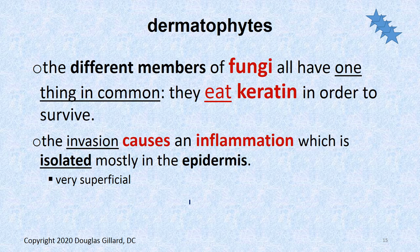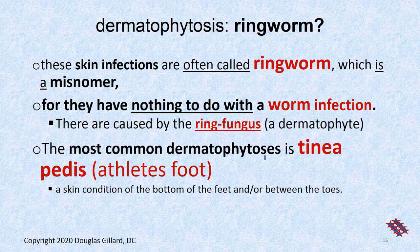Remember, underneath the nail we have an epidermis — it's short a layer or two, but it still has a stratum basale and it makes keratinocytes that push up underneath the nail plate and slough off very slowly. If you get a fungus under there, it can stimulate that process so much that you start to get an overproduction of keratinocytes and they slough off really fast and start to build up underneath your nail. That's onychomycosis.